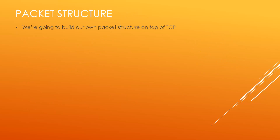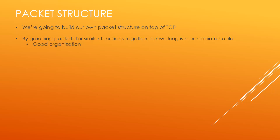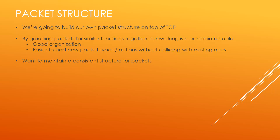So let's talk about packet structure. We're going to be building our own packet structure on top of TCP by grouping packets together by similar functions — this makes the networking and code base more maintainable. It's good organization to group packets based on their function, and it's easier to add new packets without colliding with ones you've already added. For example, if you're adding a packet related to messaging, by grouping it that way you avoid a possible collision in identification. We'll want to maintain a constant structure for the packets, and we'll have two main packet types: client request packets and server response packets, which I abbreviate as CRPs and SRPs.